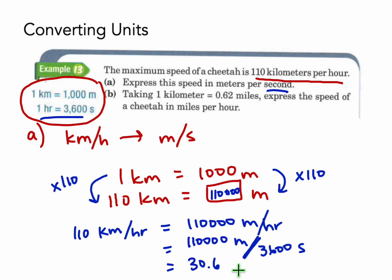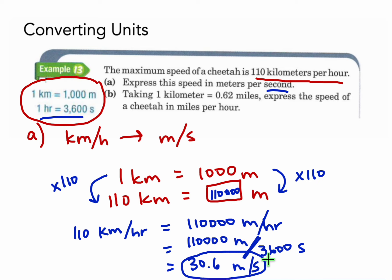So 30.6 meters per second is the answer for part A. I looked for patterns to see what I could do on both sides to make them equivalent. For converting hours to seconds, I simply replaced 'per one hour' with 'per 3600 seconds.'